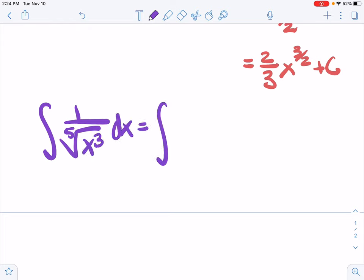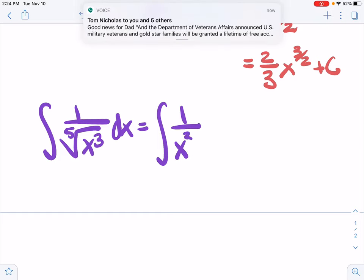Again, we just want to write it as an exponent, because that's what the power rule is set up for. So x to the 3 fifths.